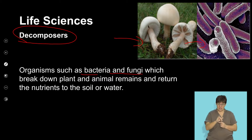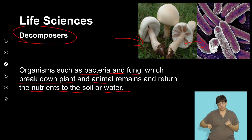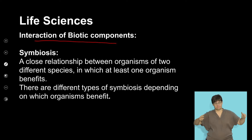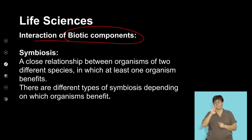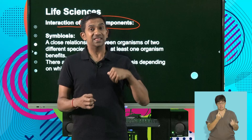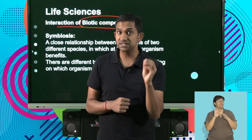Bacteria and fungi break down plant and animal remains and return the nutrients to the soil. It's important that we understand that there are various types of biotic components and interactions. Many organisms are associated with each other — that relationship is called symbiosis.